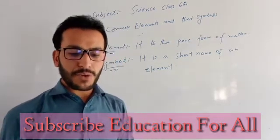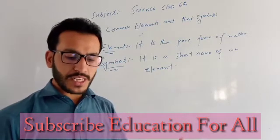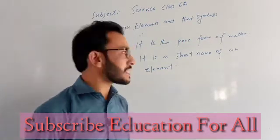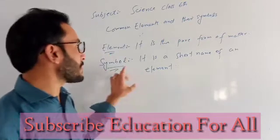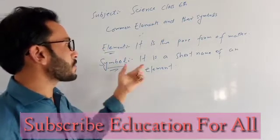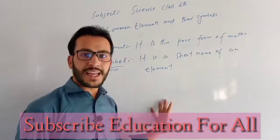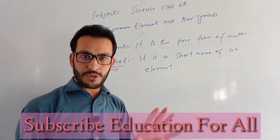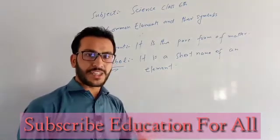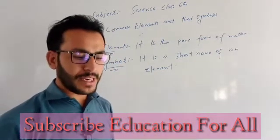For example, helium, gold, and sodium are all elements. Elements are represented by a symbol. A symbol is a short name of an element — the shortest name of an element. Symbol is a short name of an element.